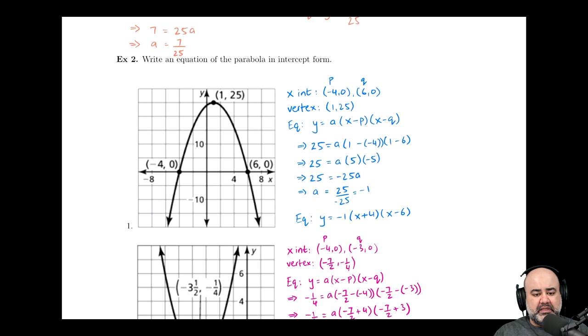Right here we start with similar scenarios where we're given a graph, and then we'll move on to where we're given some points. Here we observe that there's an x-intercept at negative 4 and there's an x-intercept at 6. So I'm going to list those two points first. I'm going to have my p as negative 4 and my q as 6.